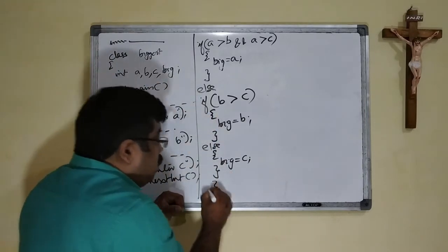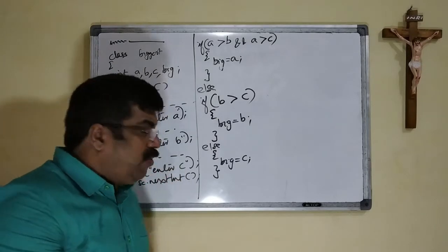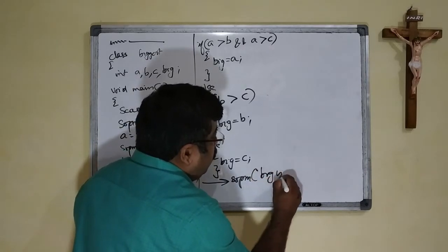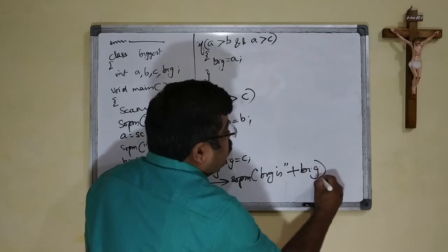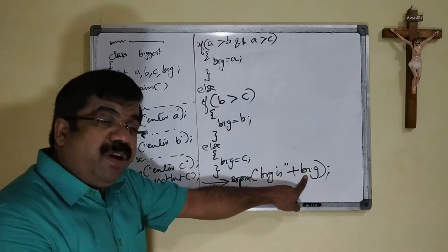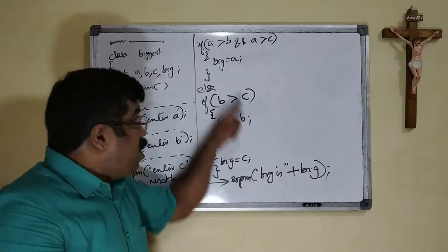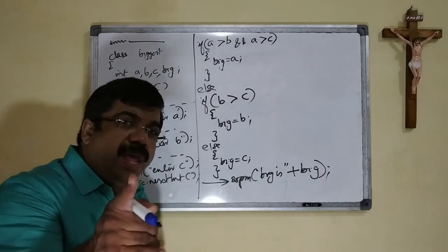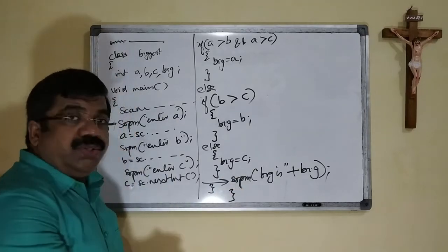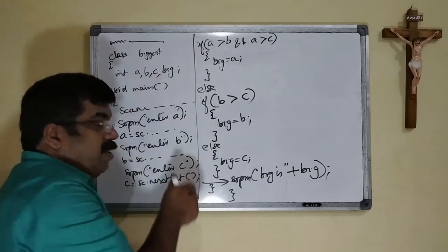The main is closed. Sorry, before this we have to give the display. So what we have to give? You may give the statement. System.out.println, the biggest is plus big. After this close the main and close the class.